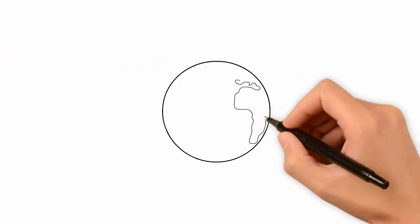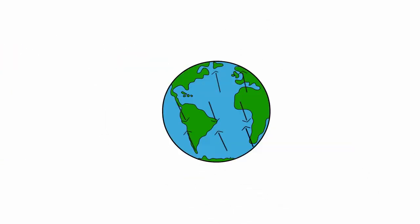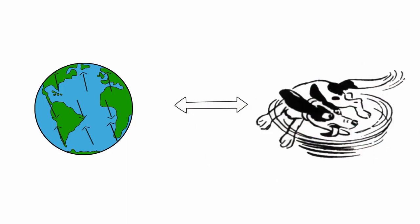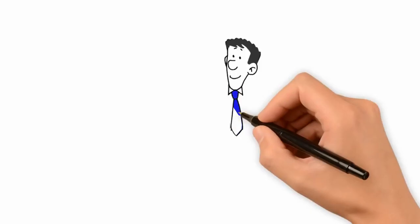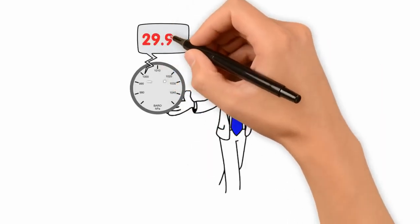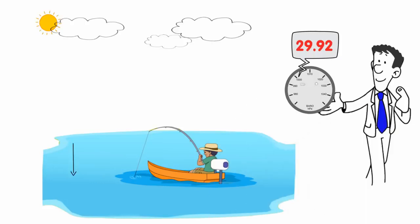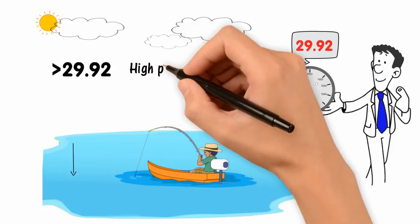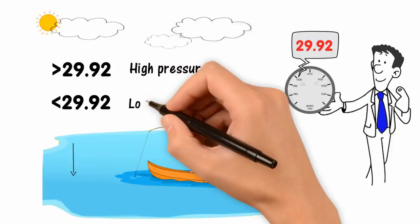Pressure chases itself around the earth like a dog chases its tail, constantly changing from high to low again and again. As a general rule, we should use a pressure of 29.92 to determine average sea level daytime pressure. Anything above 29.92 is high pressure, and anything below 29.92 is low pressure.